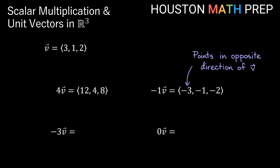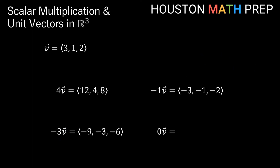For negative 3 times vector v, distributing the negative 3 gives us the vector negative 9, negative 3, negative 6. Since the multiplication is by negative 3, this gives us a vector that is not only 3 times as long, but also points in the opposite direction of v because of the negative multiplication.